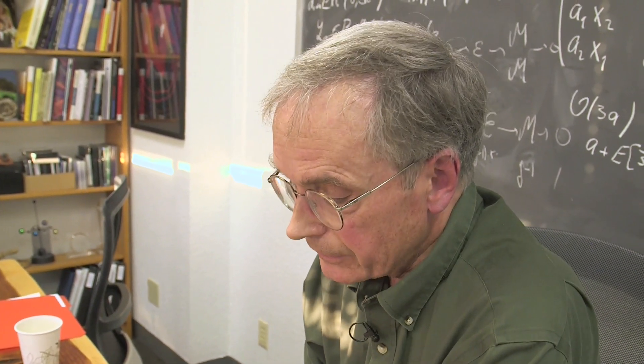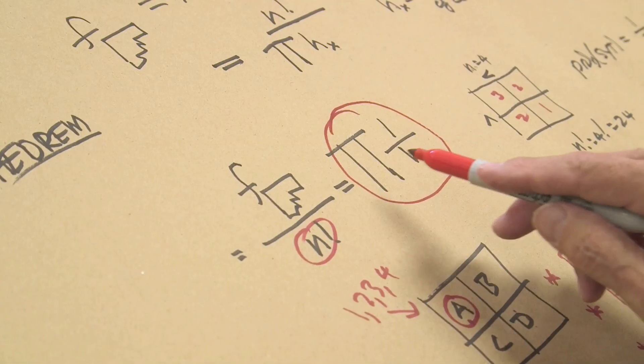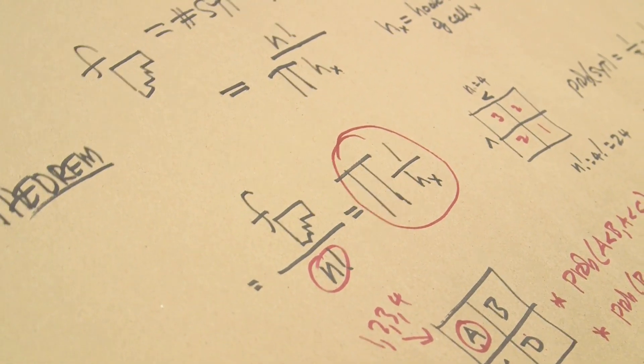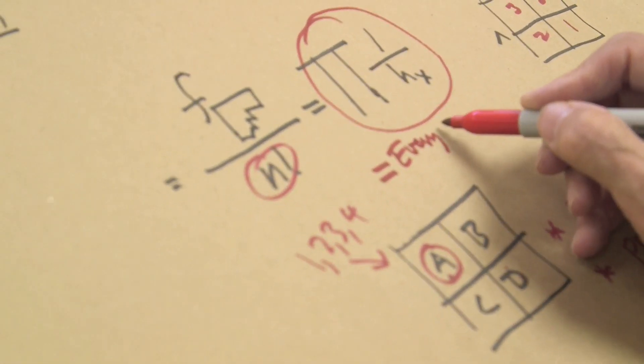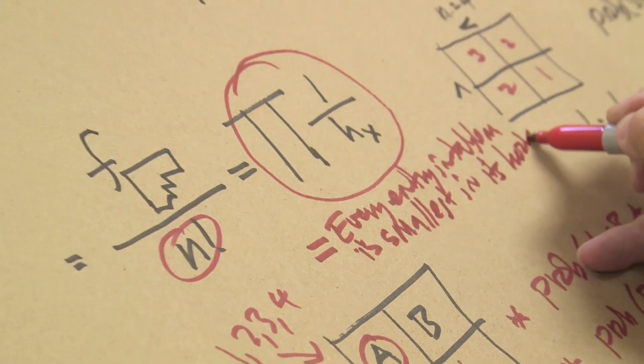I've illustrated the argument for this particular shape. More generally, I can do the same thing. I can interpret this right-hand side, the product of one over the hook lengths, as a statement about probability. This is the probabilistic statement that every number, every entry in the tableau, is smallest in its hook. So if you think about it, if you have an arrangement of numbers in a shape, and if every number is the smallest number in its hook, then it will be standard. It has to satisfy both of the rules that define what it means for something to be a standard tableau.